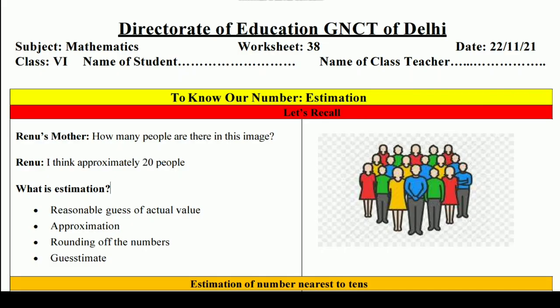Hello and welcome to Lovneesh Sarki's class. This is the Directorate of Education GNCT of Delhi's worksheet — worksheet number 38, only for class 6 students. It is taken from the subject Mathematics and we will learn, understand, and revise the topic 'Knowing Our Numbers: Estimation' in this worksheet. So without wasting time, let's start.